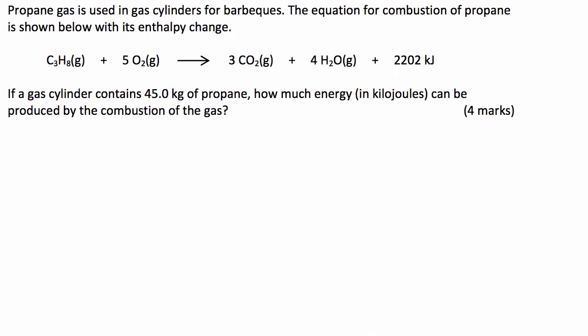Now the enthalpy change is given by this number here. So basically because we've got 2,202 kilojoules being produced, this is what we call an exothermic reaction. That's just a little side note.